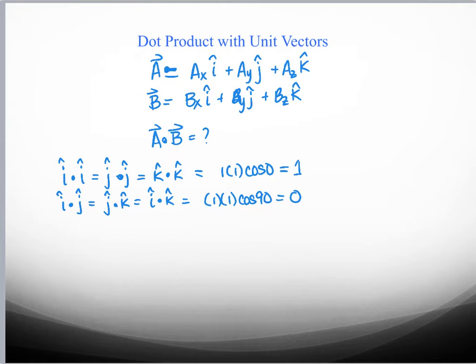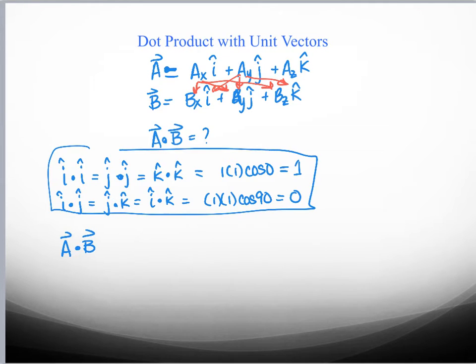So if we were going to calculate the dot product by literally taking each one of these terms, just distributing it out and multiplying and doing the dot product, we would get a mixture of taking terms like Ax times Bx times i dot i or Ax times By times i dot j. And what would happen is the only terms that would survive because of what we just realized, we would only have to multiply like terms together.